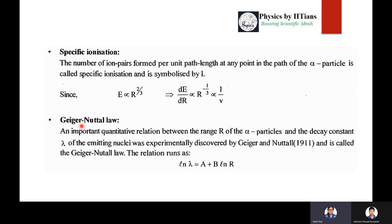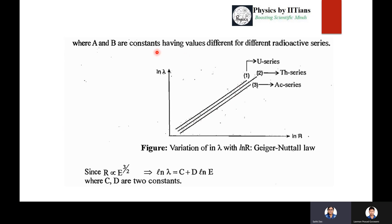The Geiger-Nuttall law is an important quantitative relation between the range of the alpha particle and the decay constant λ of the emitting nucleus. It was experimentally observed by Geiger and Nuttall in 1911. The relation states that ln λ = a + b·ln(R), where R is the range of the alpha particle and λ is the decay constant; a and b are constants with different values for different radioactive series such as uranium, thorium, and actinium. Since R is proportional to E^(3/2), it follows that ln λ = c + d·ln(E), where c and d are also constants.